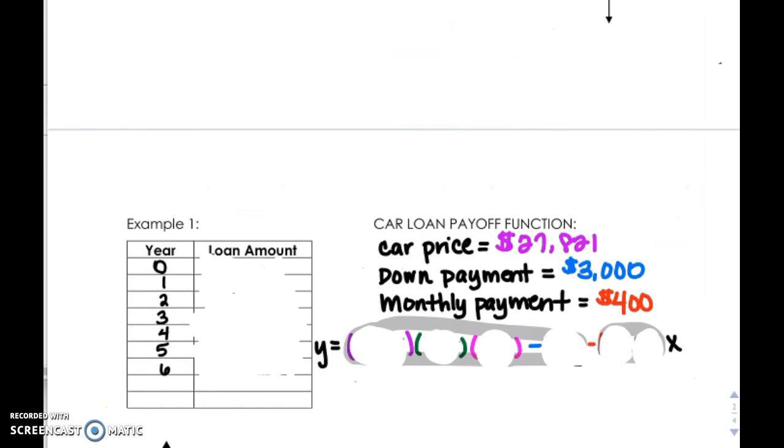So we're going to walk through an example today now where we give you some parameters about the car and your down payment and monthly payment. And we're going to show you how to substitute the information into your function so that you can come up with your equation. Then we'll have you go to Desmos to graph the function and remind you of how you will change your window, graph your function and how you will find your Y values for the given X values in the column to the left where we're naming the years.